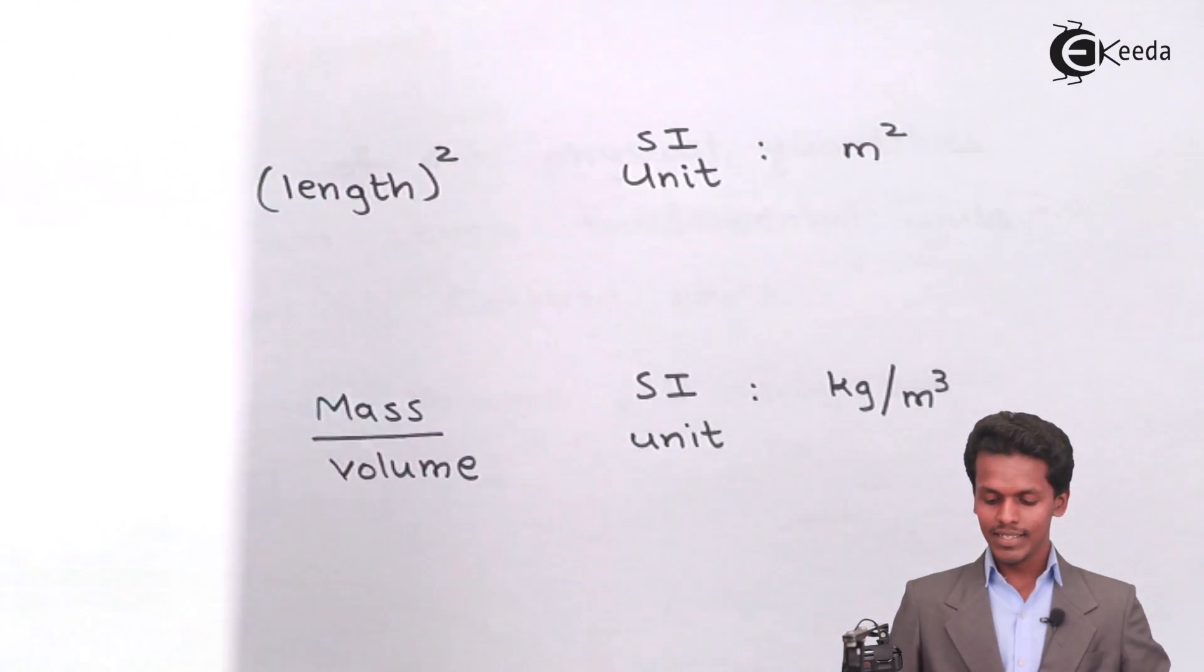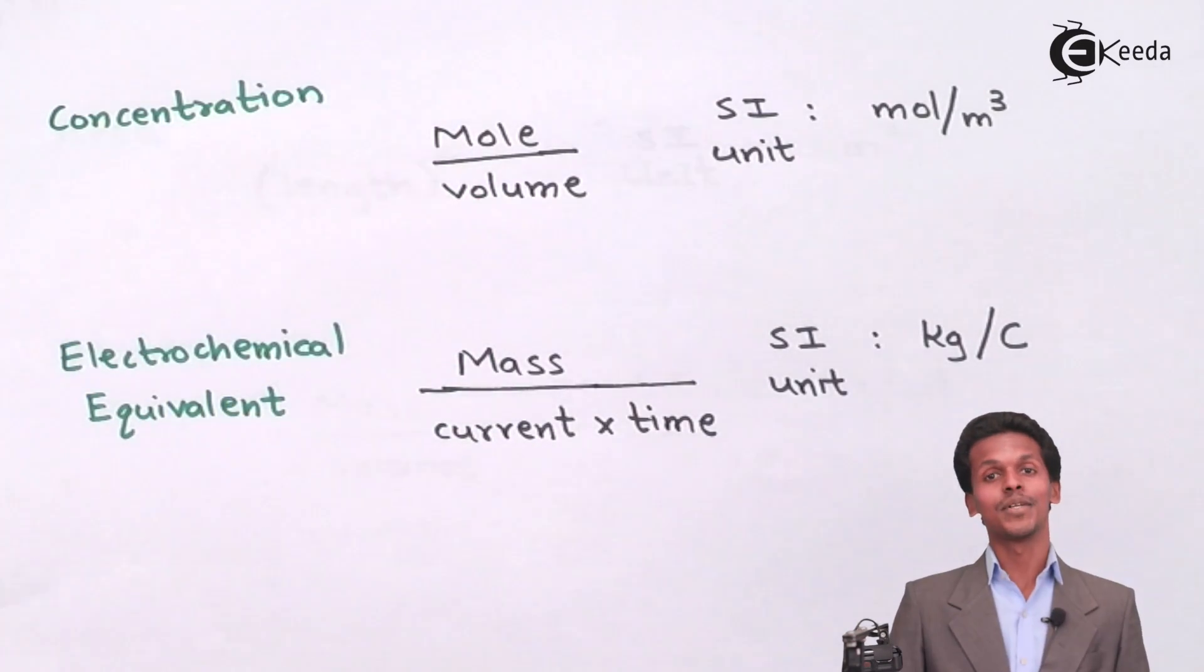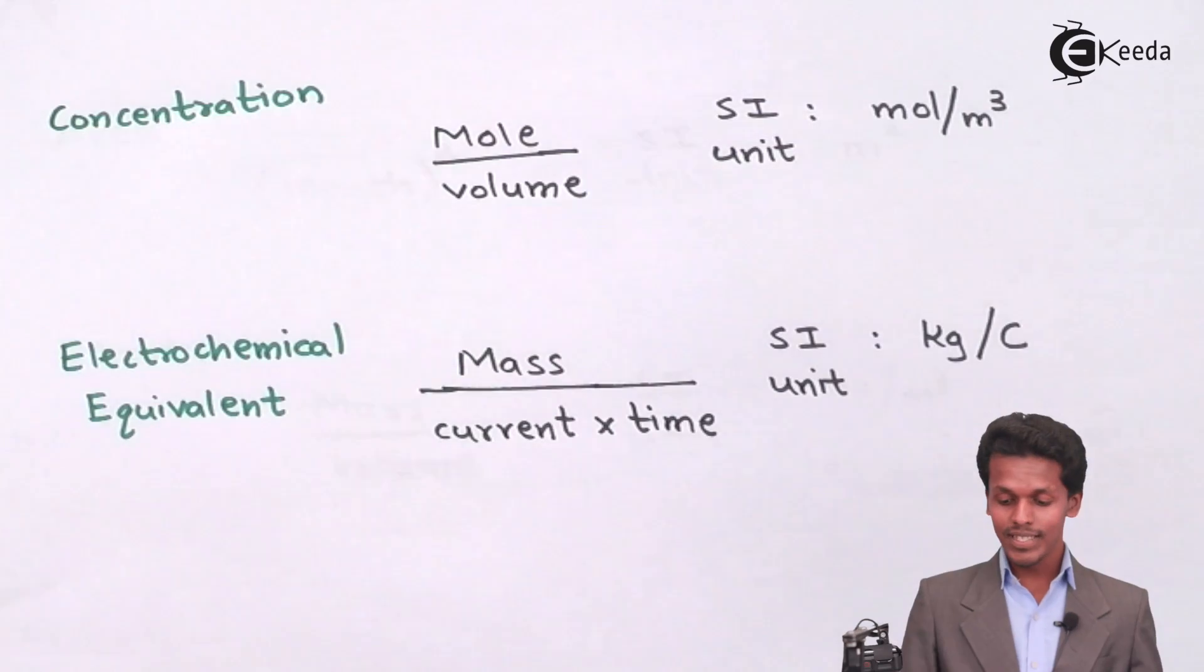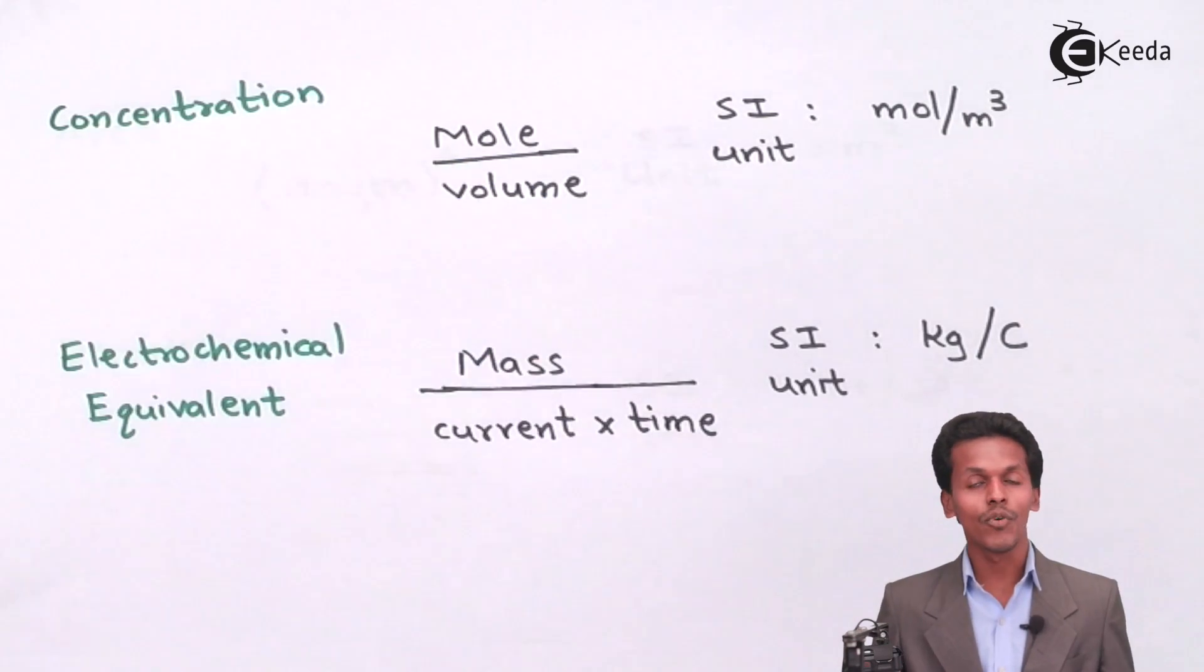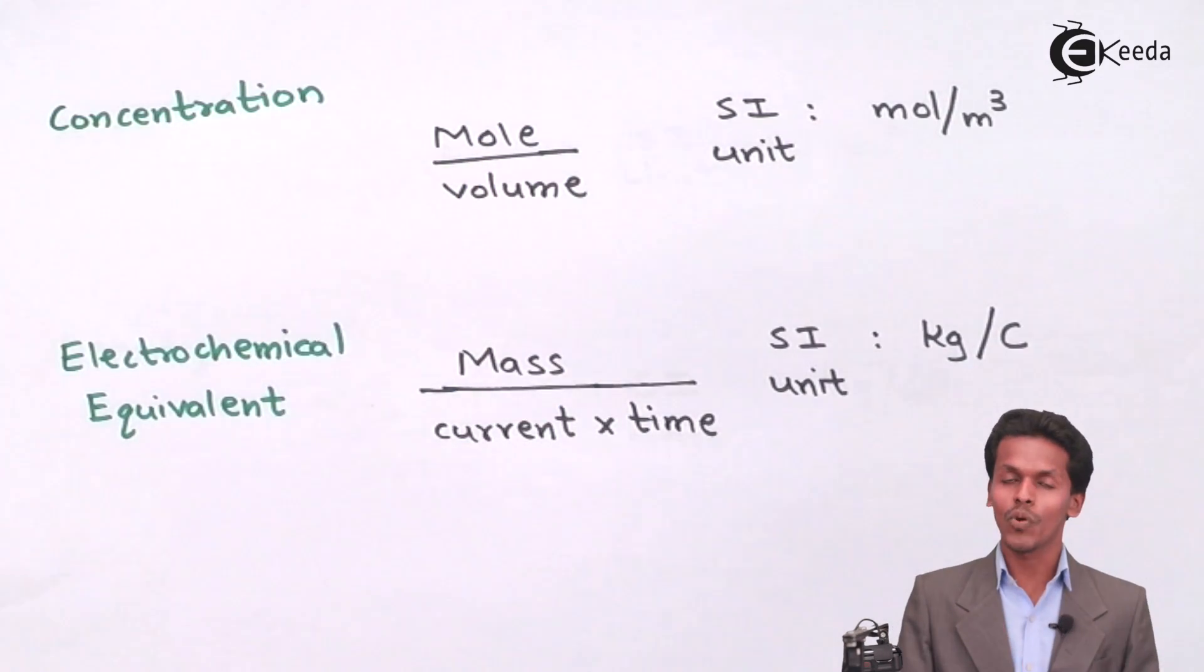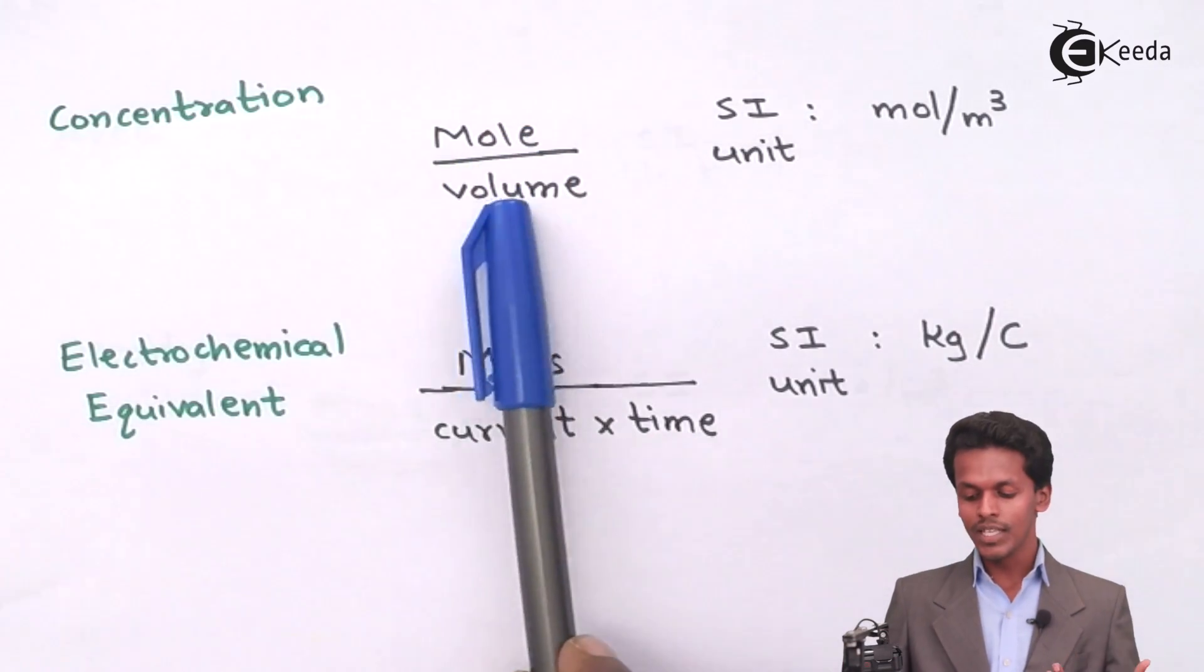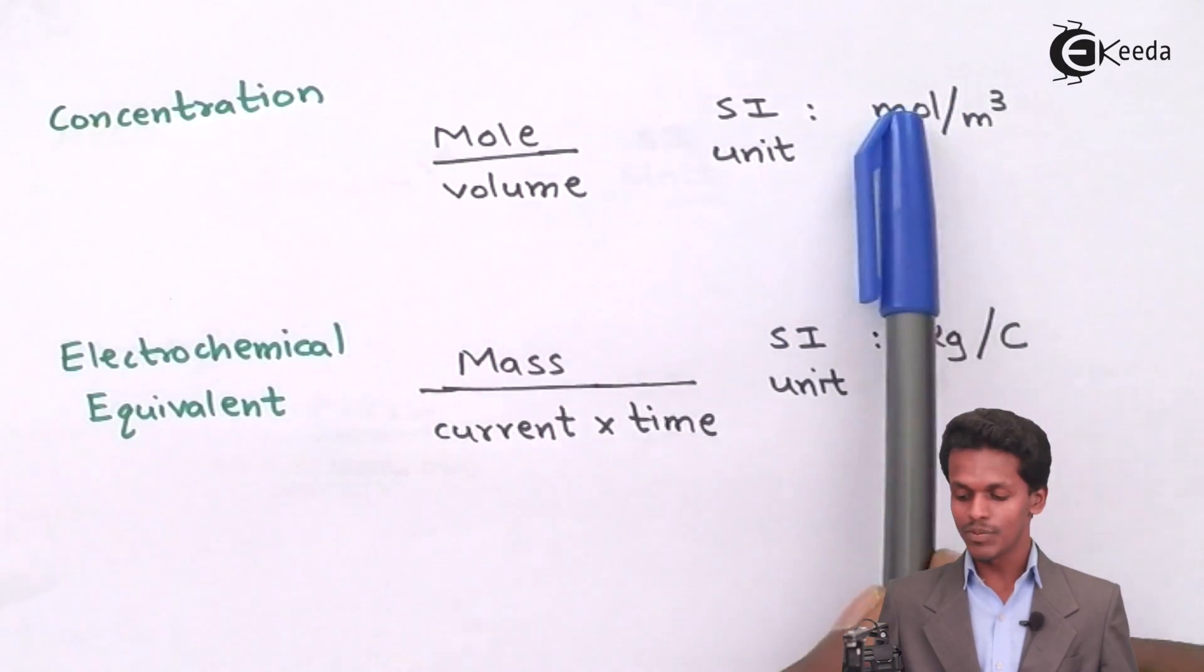Let me give you another example: concentration and electrochemical equivalent. These are two quantities you are going to study in chemical reactions during numericals and while studying chemistry. This is based on electrochemistry. Let me talk in deep detail about concentration. Concentration is nothing but moles divided by volume. There are different types of concentrations, but in this case we consider moles divided by volume because mole is a fundamental unit and volume is also a fundamental quantity which has a unit of moles per cubic meter, that is moles per m³.